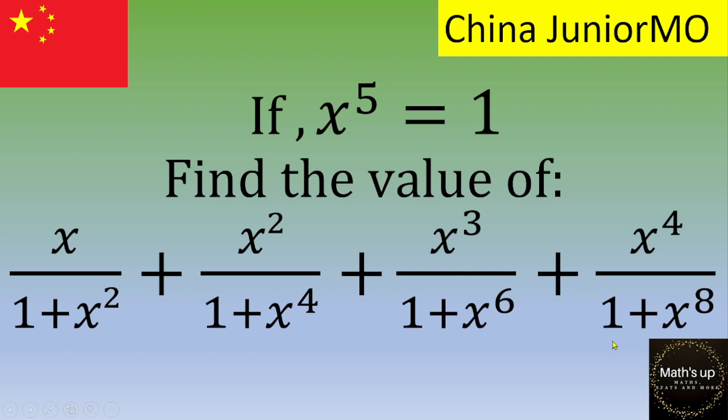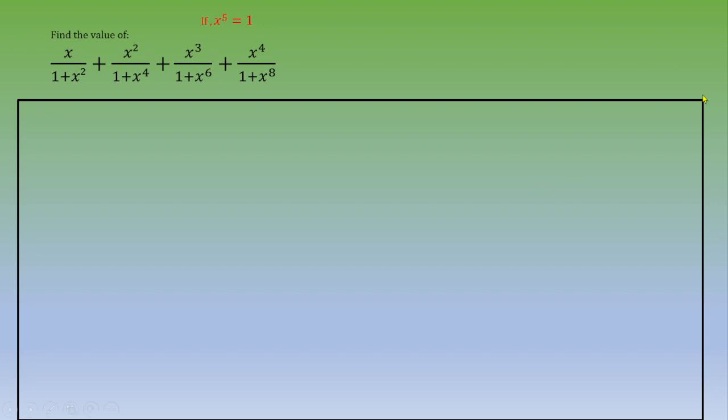If you want to give a try, please pause the video. Otherwise, let's see the solution. First, we're going to focus on x power 5 equals 1. Then we can deduce from that that x is different from zero.